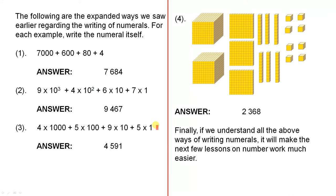For the third example, 4 times a thousand plus 5 times a hundred plus 9 times ten plus 5 times one is four thousand five hundred and ninety-five. And the fourth example uses base 10 blocks: there are two thousands, three hundreds, six tens — so that's sixty — and eight singles. So the answer is two thousand three hundred and sixty-eight.